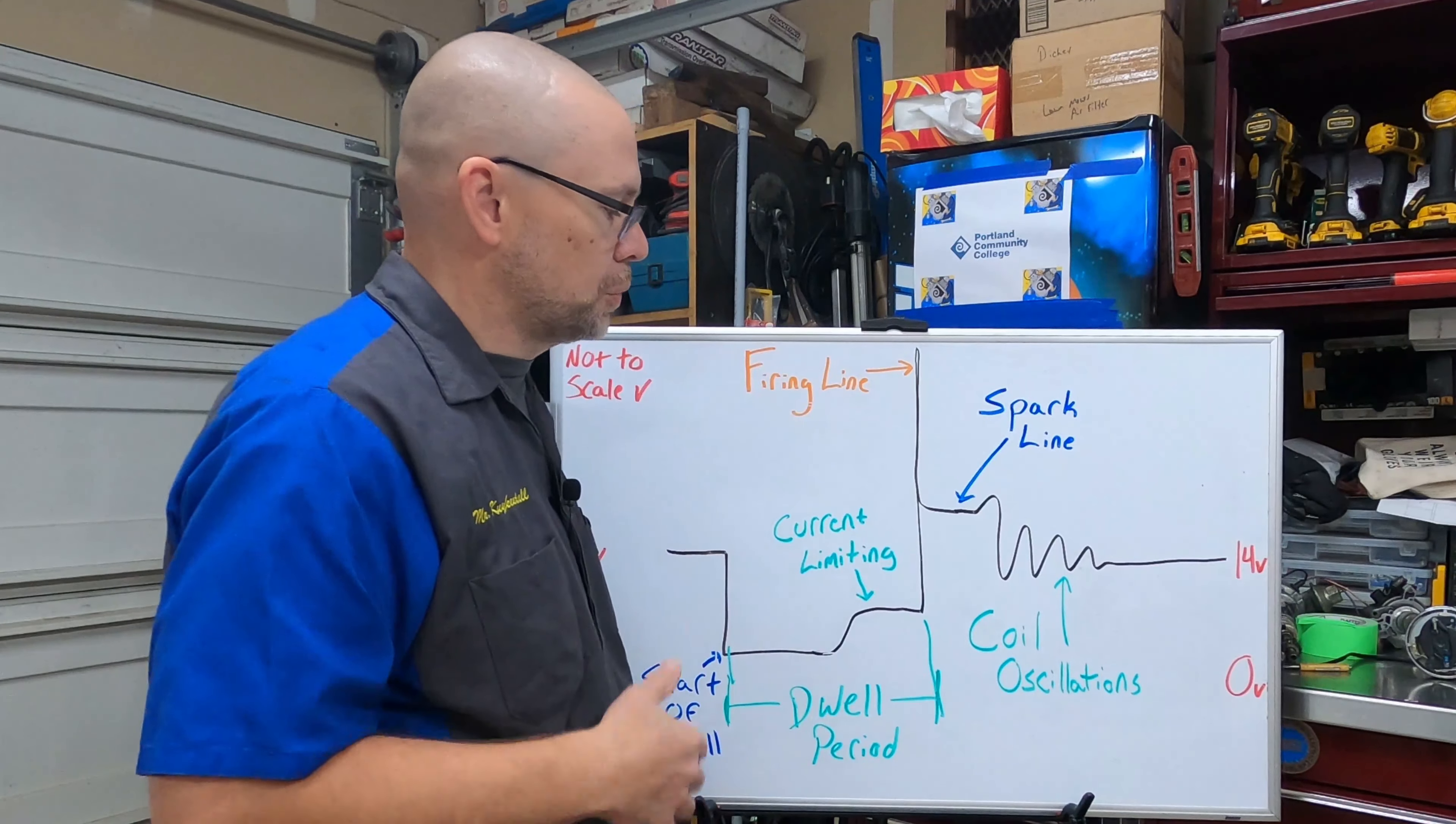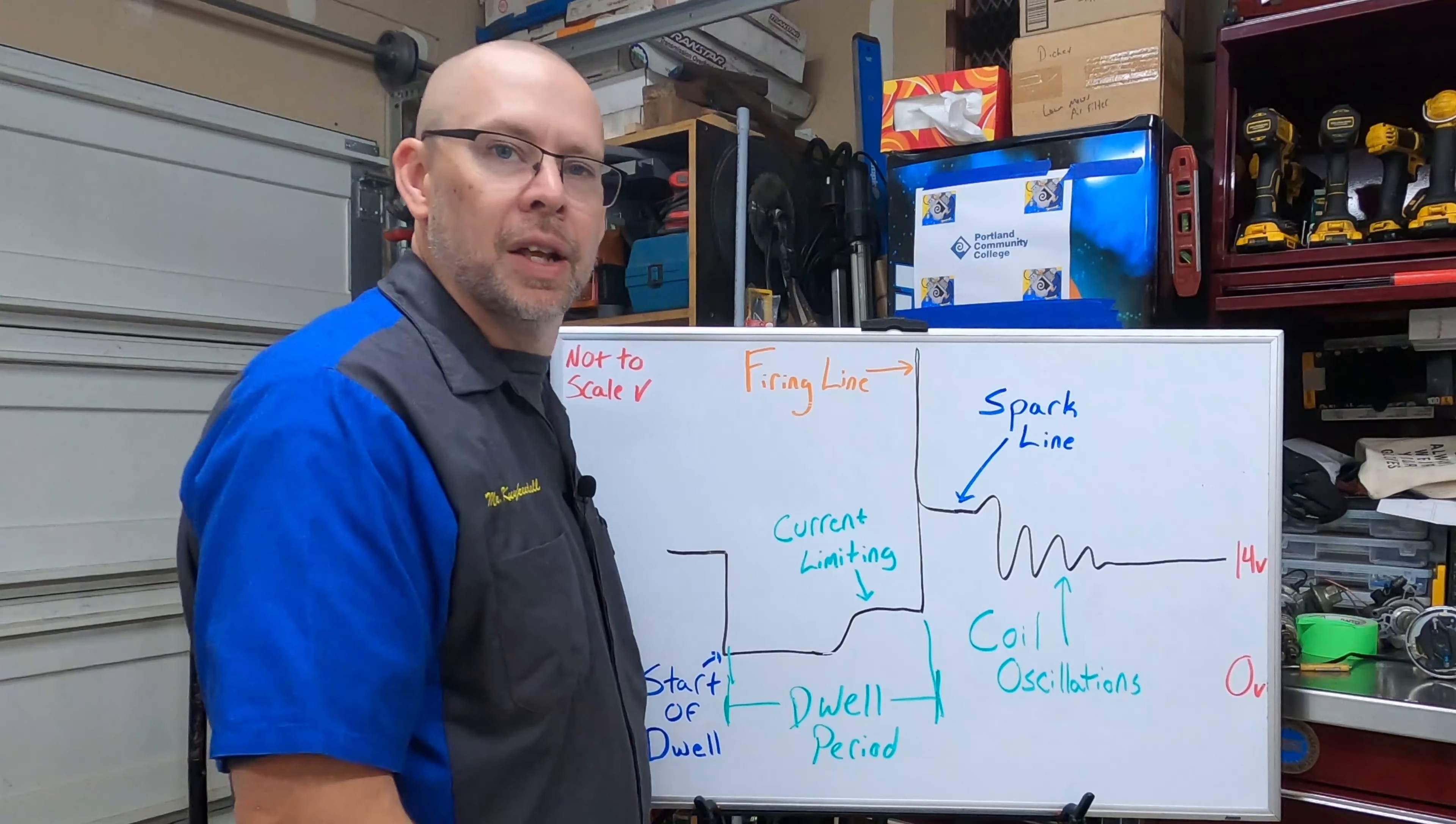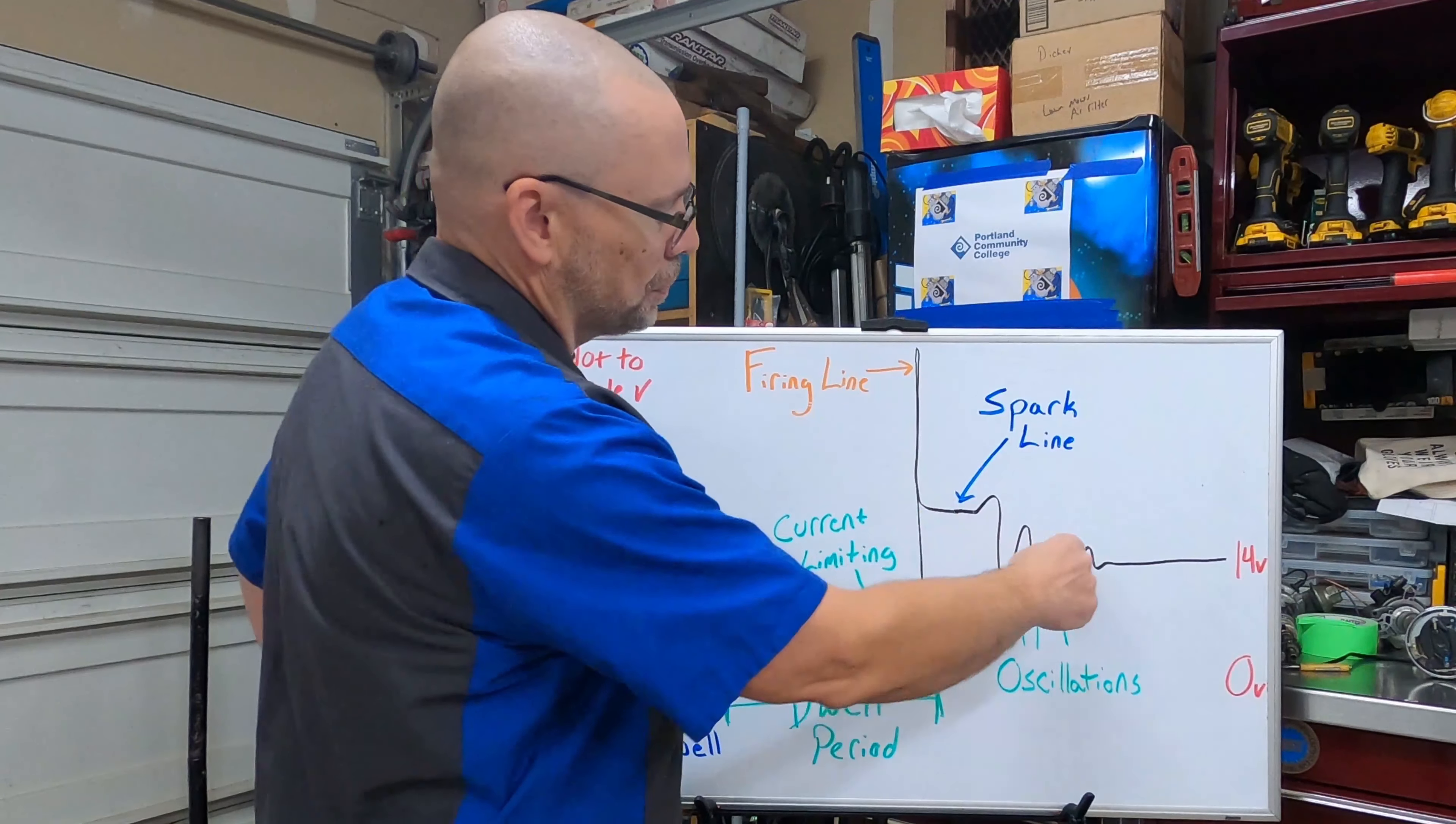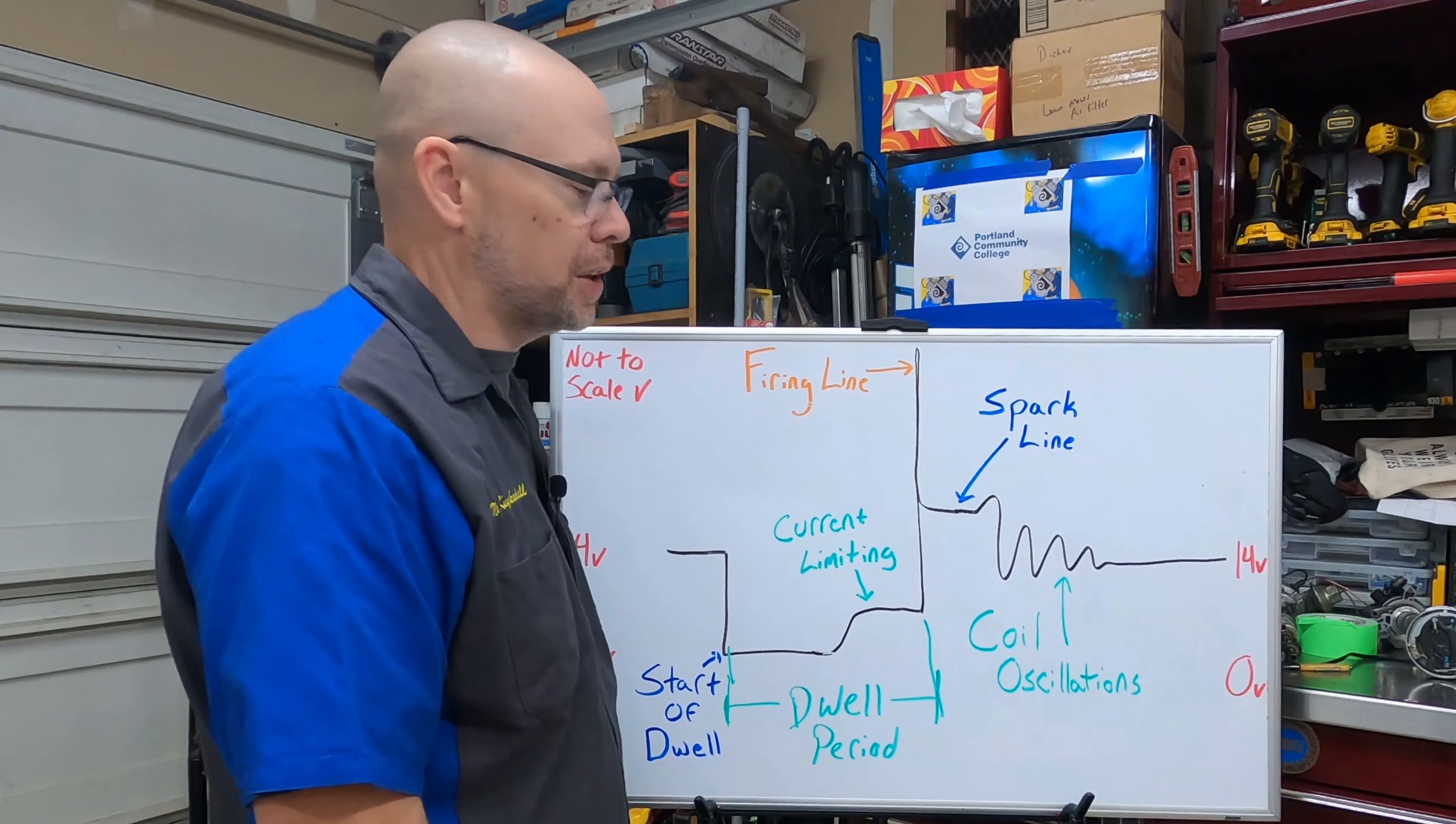If we had more energy developed from our ignition coil than we used, we'll have coil oscillations. We didn't use everything, the spark went out before we needed to use it all up and we had excess, we didn't burn it all up jumping all the gaps, we had plenty to ionize the plug gap and we had some leftover. This is what we want.